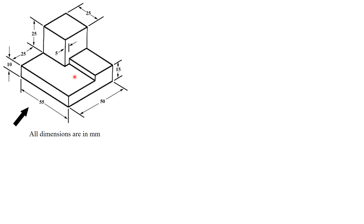Let us go to the problem and see how it is solved. This is the given isometric view. To have a clear understanding, let me name the surfaces of the object: surface A, B, C, D, E, F, G, and H. This naming is just for understanding purposes.